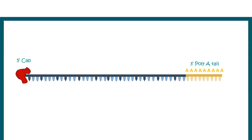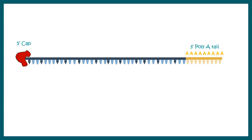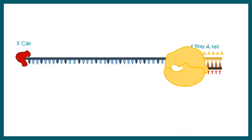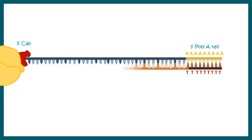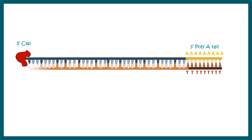Now let us look at mRNA. This particular mRNA has a 5' cap and a 3' polyadenylated tail. The first step of this reverse transcriptase PCR is to form a primer, and generally the primer used in this reaction is an oligo-dT primer — a stretch of T nucleotides.